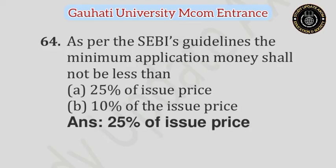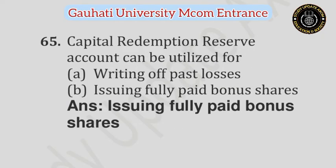Question number 64: As per the SEBI guidelines, the minimum application money shall not be less than — Option A: 25% of the issue price, Option B: 10% of the issue price. Answer is 25% of the issue price. Question number 65: Capital redemption reserve account can be utilized for — Option A: Writing off past losses, Option B: Issuing fully paid bonus shares. Answer is Issuing fully paid bonus shares.